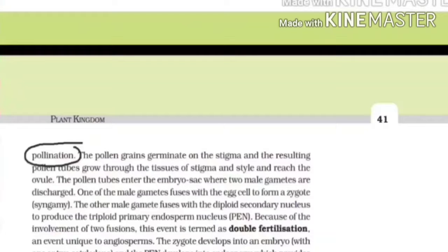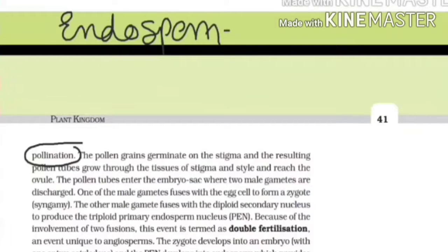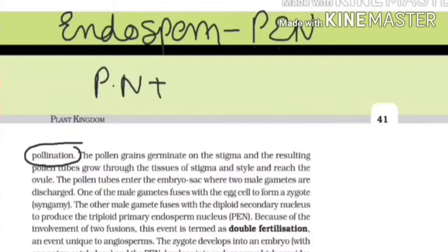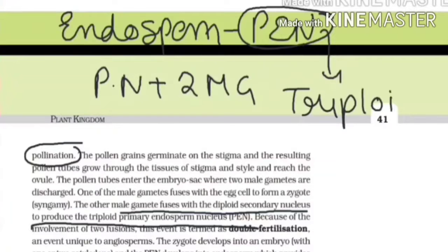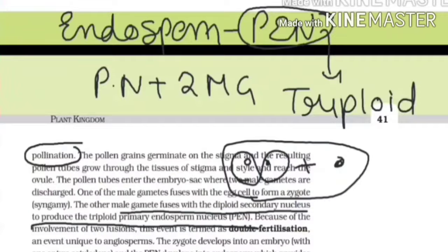The next thing related to the endosperm: it is known as the PEN — primary endosperm nucleus. This is formed by the fusion of polar nuclei with the secondary male gametes. The other male gamete fuses with the diploid nucleus to produce a triploid primary endosperm nucleus. This PEN is triploid in nature because polar nuclei have two nuclei and the male gamete has one nucleus — when these three nuclei fuse together, they form a 3N number of cells. That is why it is triploid in nature.